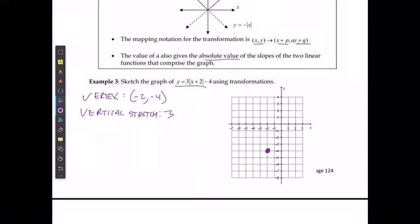And then if I have a vertical stretch of 3, then that means that when I move to the right, I have a slope of 3, so up 3 over 1. When I'm moving to the left, I have a slope of negative 3, so up 3, left 1.